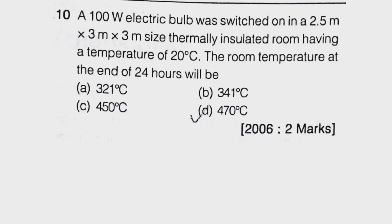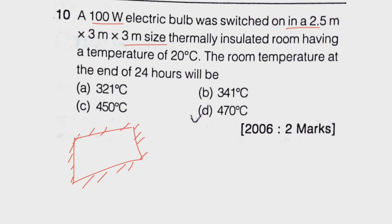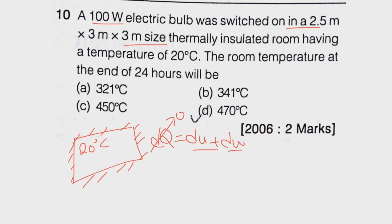Let us see one more question. A 100-watt electric bulb is switched on in a 2.5 x 3 x 3 m thermally insulated room. There is no heat exchange between the room and the surroundings. The initial room temperature is 20 degrees centigrade. We need to find the room temperature at the end of 24 hours. Going back to thermodynamics: dQ = dU + dW. Since it is thermally insulated, dQ = 0, so dW = dU. Work is done by means of the electric bulb.